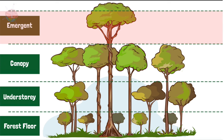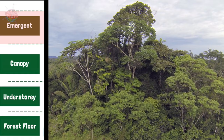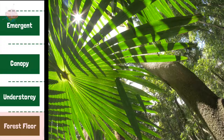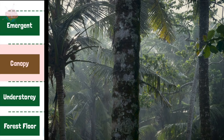The four zones are: the emergent layer, the canopy layer, the understory, and the forest floor. Trees in the top or emergent layer receive the most sunlight, while the forest floor receives less than 2% of the sunlight. The canopy layer is bright but shady.